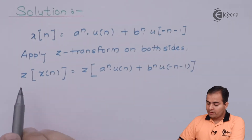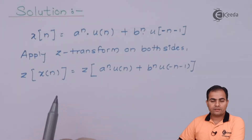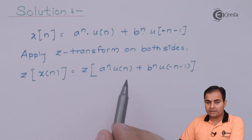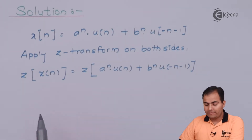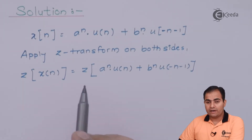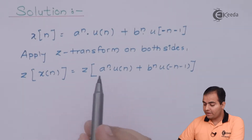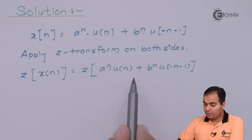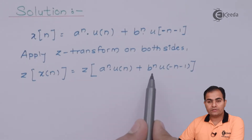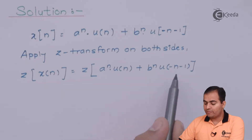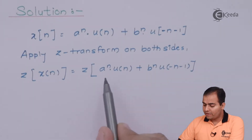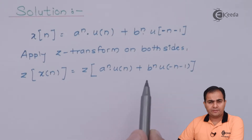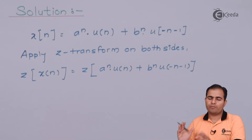The Z transform of X(n) is X(Z). On the right-hand side we have the Z transform of A^n U(n) plus B^n U(-n-1). We can use the time scaling property here.